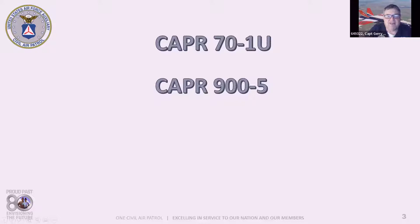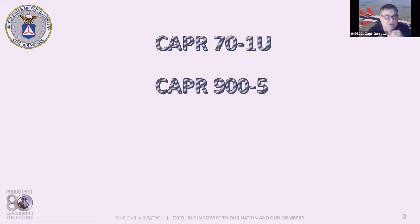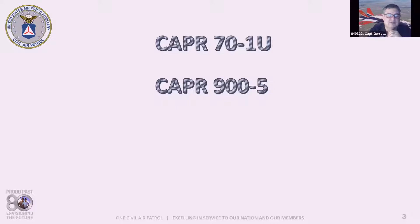CAPR 900-5, the CAP Insurance Benefits Program — we will be discussing much of what it contains, but you're expected to download it and have it available. It can always be found at gocivilairpatrol.com. That is national headquarters' main web page, and the information there is invaluable. Whether you're in the AE program, the cadet program, or the emergency services program, there's a ton of links and downloads — take advantage of them.